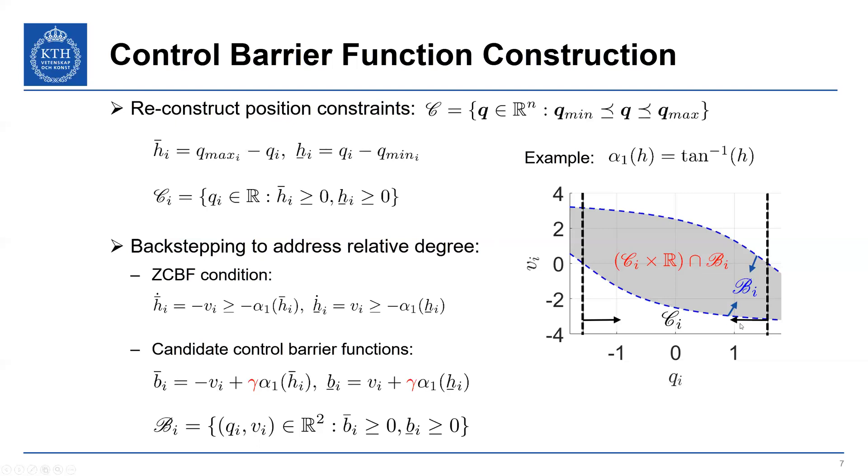Again, it might be better to look at the picture to the right. So the set C_i, as I said, was between these black dashed lines. The set B_i is the gray area that's bounded by the dashed blue line. And so what we really want to check is the safe set, which is the intersection of both these denoted by C_i cross product with the real line intersected with this B_i. And so that's the bounds defined by the black lines and the dashed blue lines here.